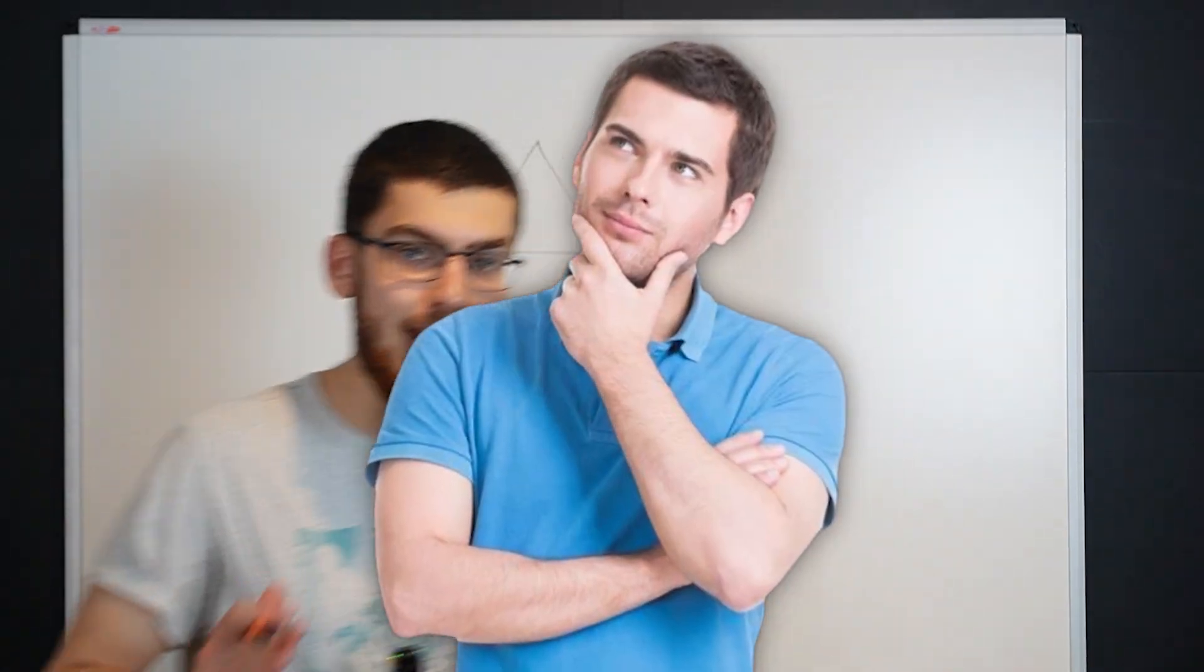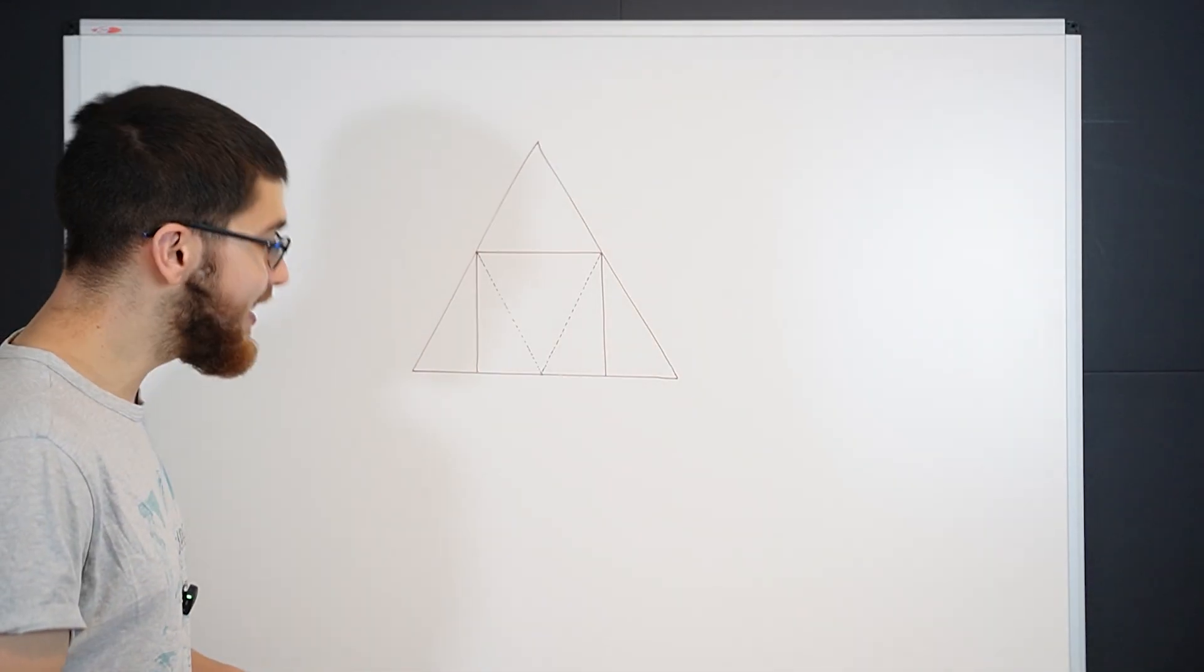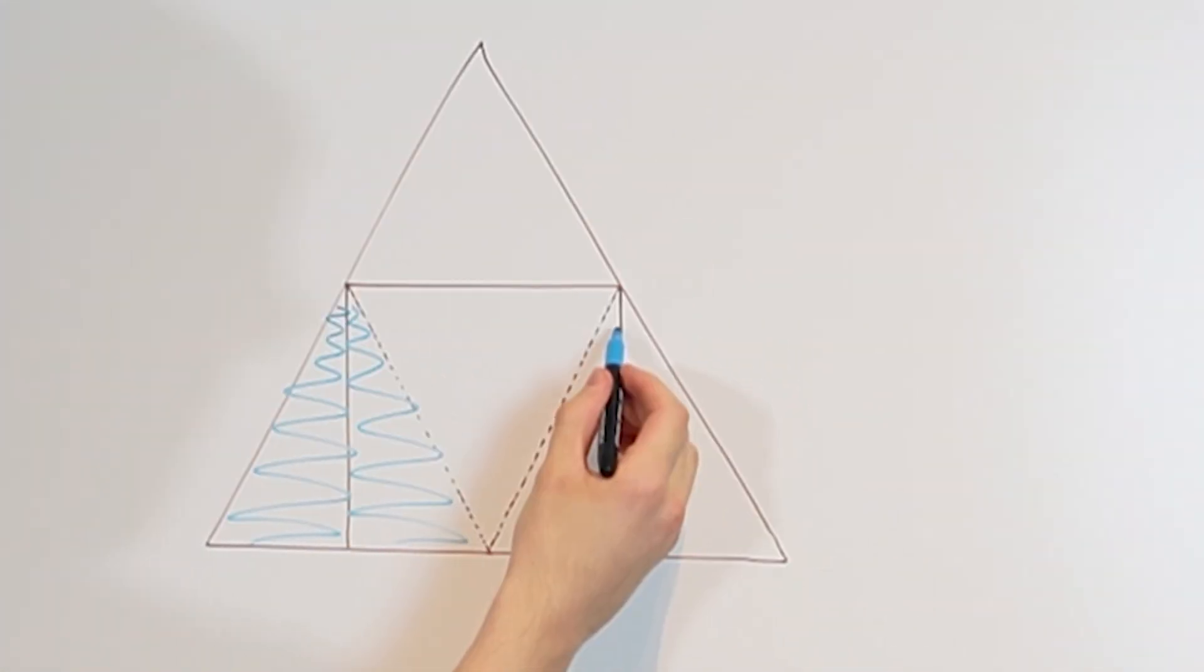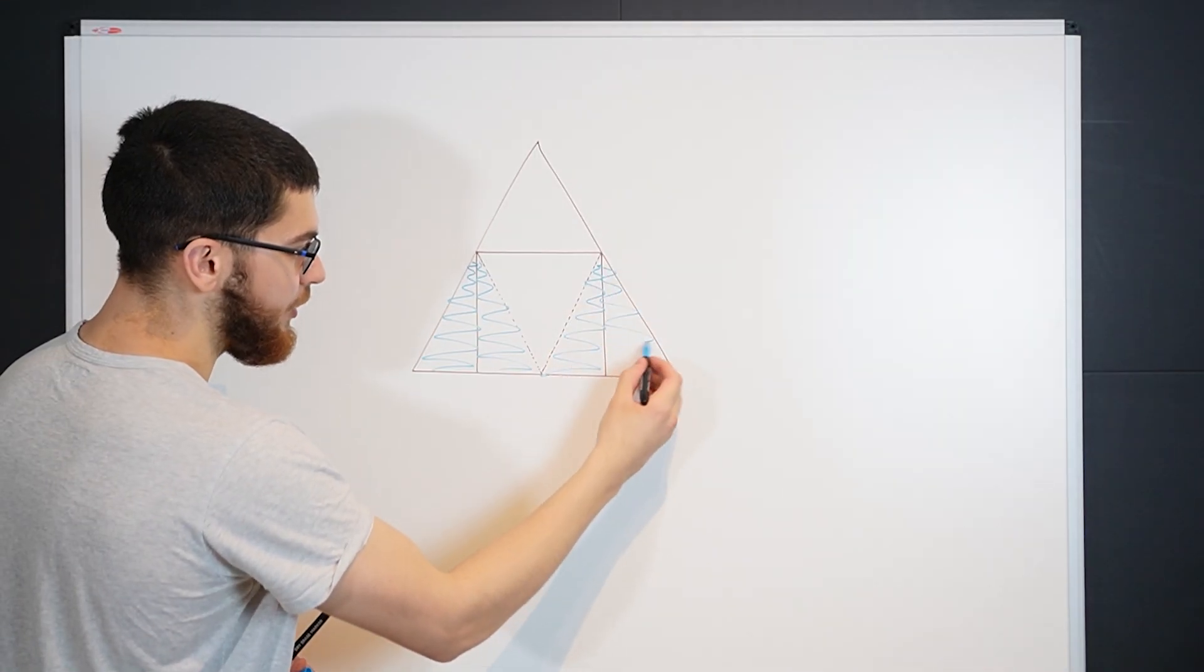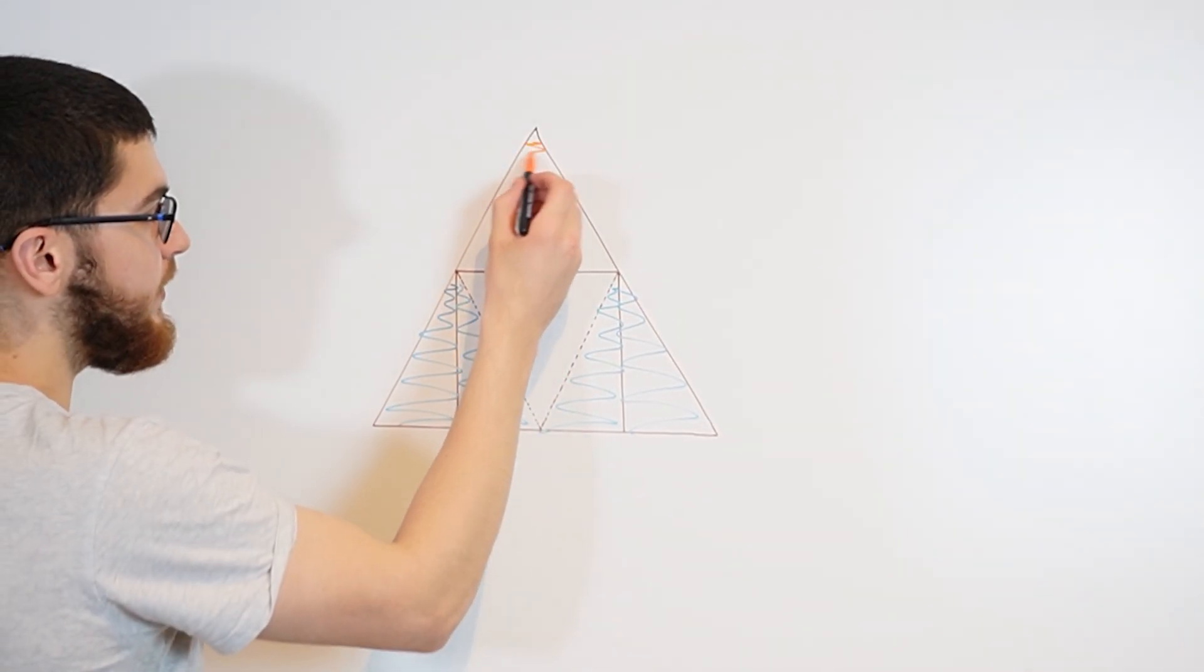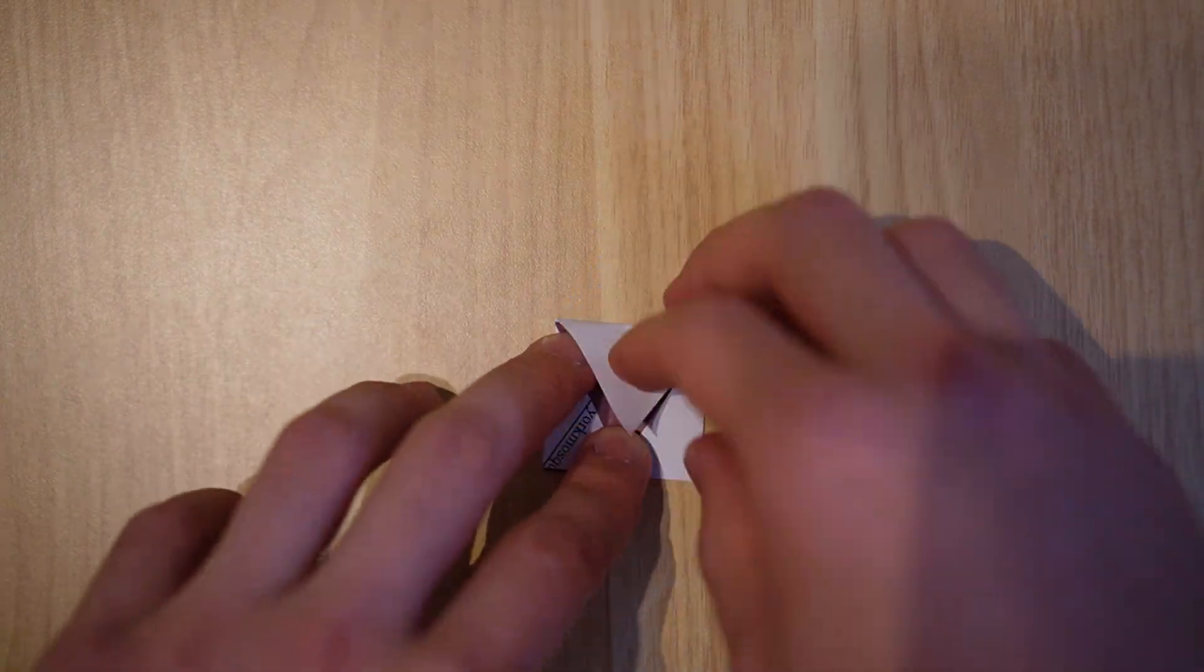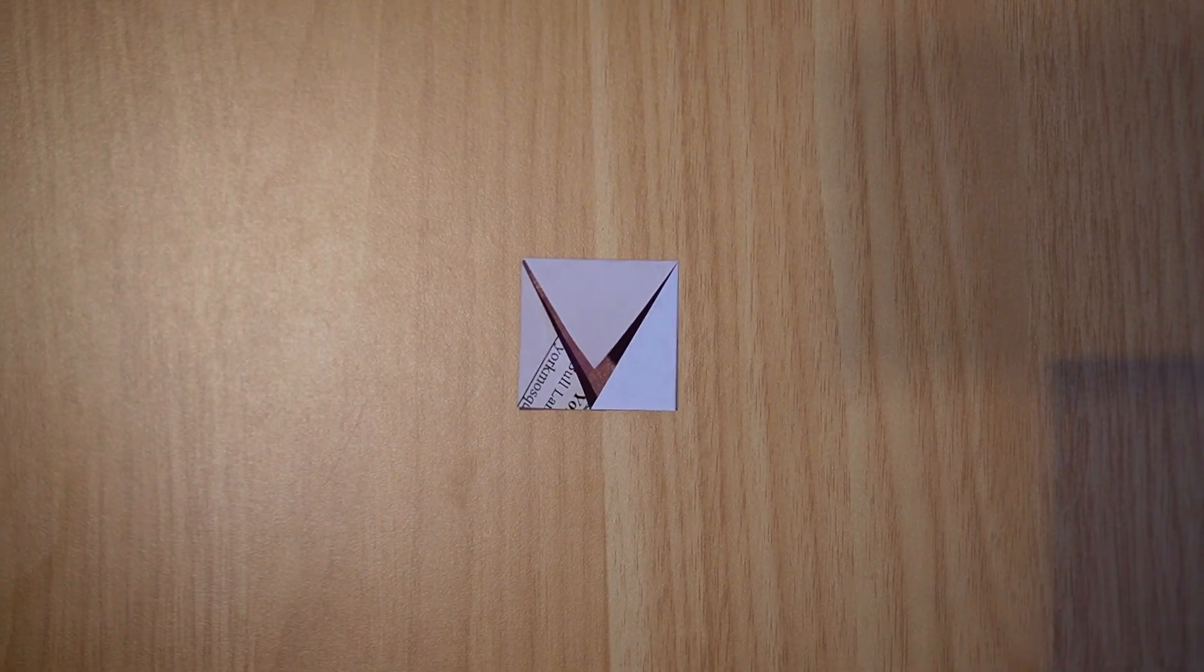If you just try to imagine it in your head, you might think that the answer is one half because these two triangles are the same as these two triangles and this triangle at the top is roughly the same as this triangle. So the area inside the square is roughly equal to the area outside the square, so the answer is one half.